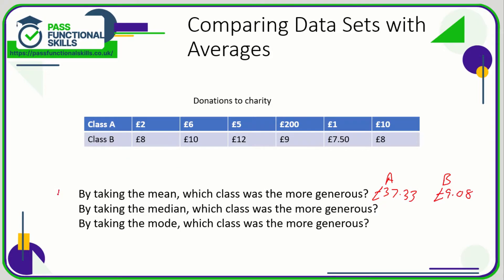So we can see that Class A was much more generous if we're going off the mean. Now let's look at the median — the middle value when we put them in ascending order. For Class A in ascending order: one pound, two pounds, five, six, ten, two hundred. The median is halfway between five and six pounds, so that is £5.50.